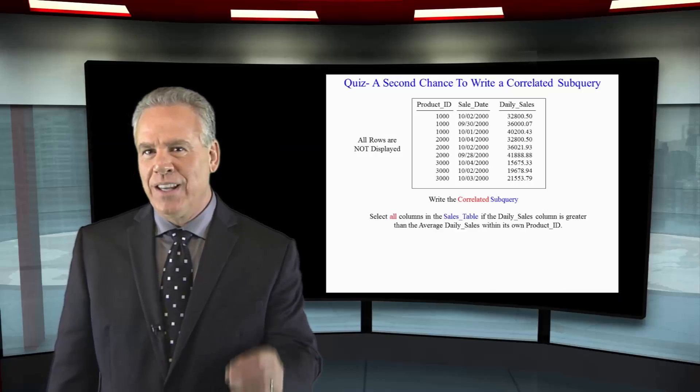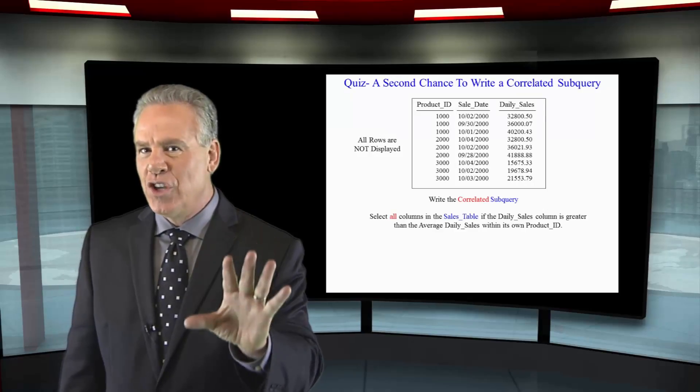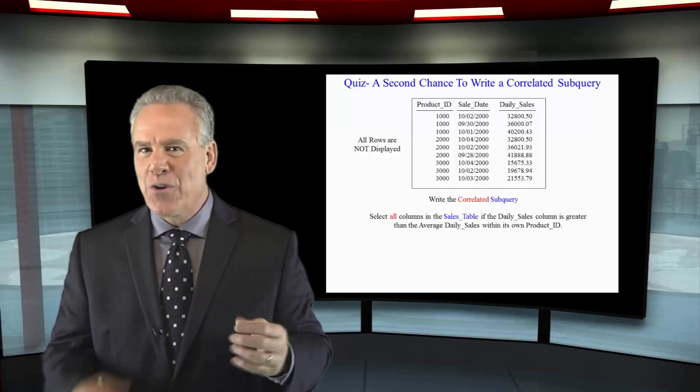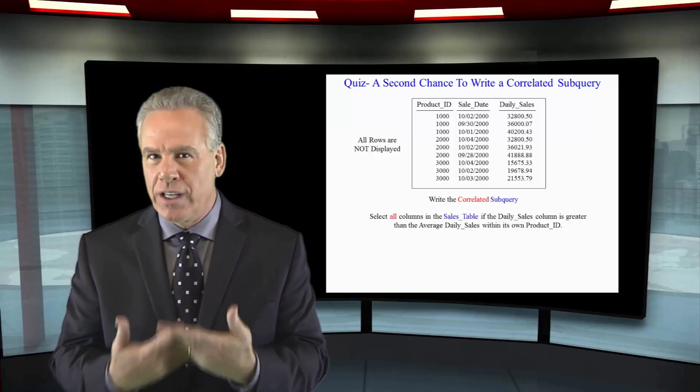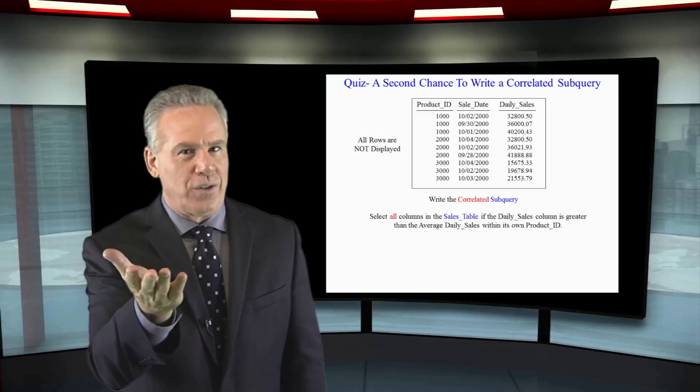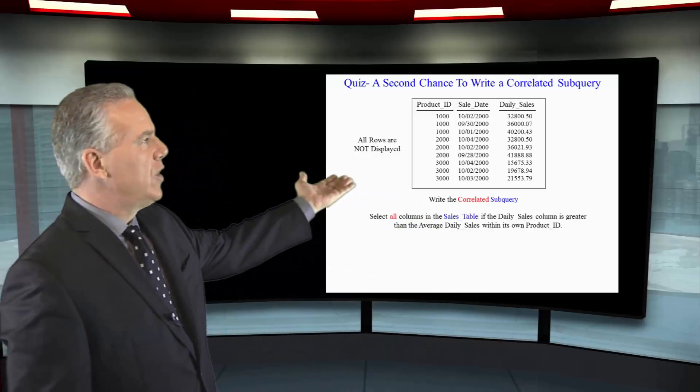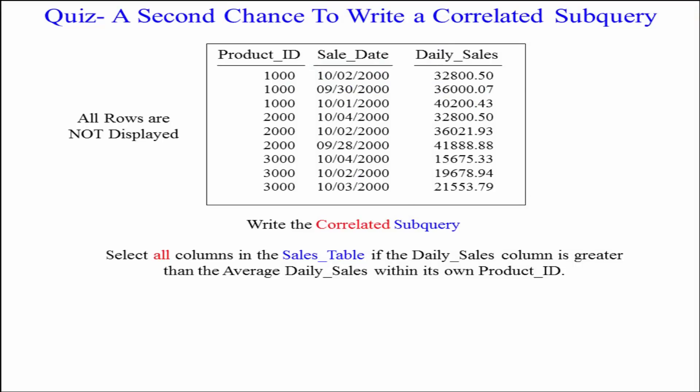Here's another opportunity. I'm going to give you two or three chances to try to get the correlated subquery down. I know you're going to get this. This is going to be well worth your time. Here is the sales table with product ID, sale date, and daily sales. I want you to show me all columns from the sales table if the daily sales column is greater than the average daily sales within its own product ID. Good luck.